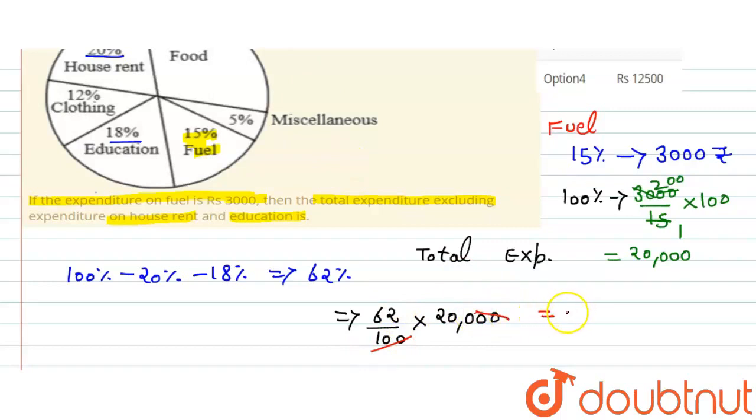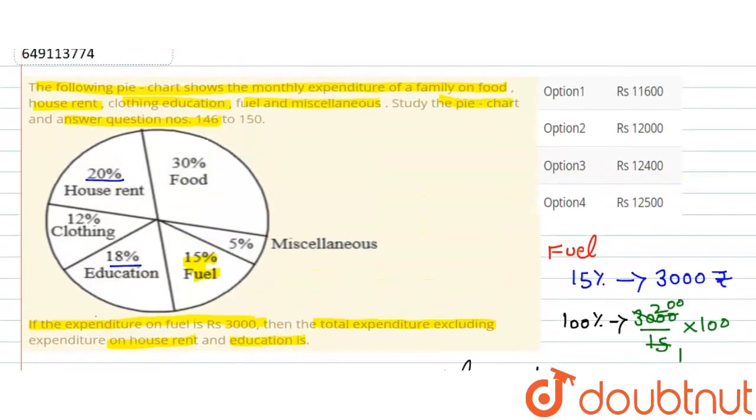200 into 62 equals Rs. 12,400. So this is our required answer. I hope you understand. Now we will check the options. Option third is correct, that is equal to Rs. 12,400.